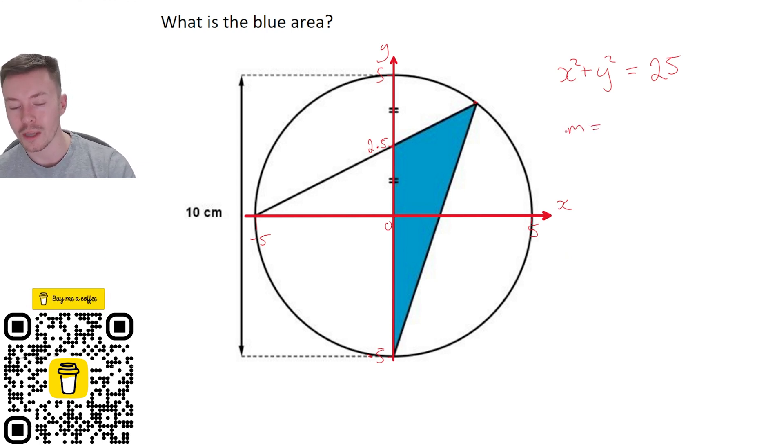To get the equation of this line, we need to do the gradient first. The gradient is the change in y over the change in x. We've got 0 and 2.5 here, so we use 2.5 on the top as my y, take away my other value of y for this bottom leftmost point, which is 0, divided by—you've got to take away in the same order—the x value for this first coordinate that I used was 0, subtract minus 5.